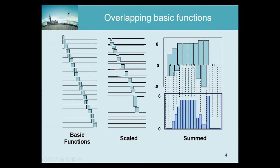One thing to note is that although the profile represents radioactivity — a non-negative quantity — when we decompose it as a combination of basis functions we may need negative amplitudes. The reason is that a large basis function is needed to explain a big peak, but that also introduces an unwanted contribution in the adjacent pixel, which must then be cancelled by another function with a negative amplitude, and so on.